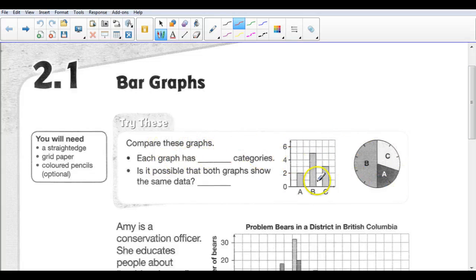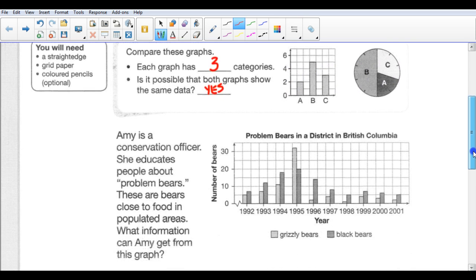So let's compare these graphs. Each graph has how many categories? Well, I can see 1, 2, 3 here, and 1, 2, 3 there, A, B, and C. Is it possible that both graphs show the same data? Well, let's look at the frequency for A, B, and C. So B has the most here. So over here, does B show the most? And I think it does. C has the next highest. And is C, the area of C here, larger than A? Yes, it is. So I would say that the answer would be yes. They both possibly could show the same data when you compare them.